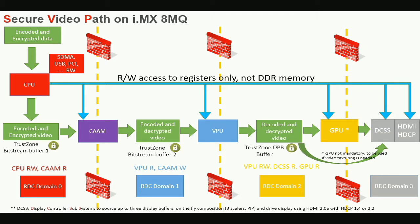When we configure the RDC this way, the CPU cannot access this memory. The CAAM decrypts data from non-secure memory and outputs it to a secure buffer. That buffer can only be read by the VPU, which decodes the data into another buffer — again only writable by the VPU. Then the DCSS, the hardware composer of the i.MX 8M, reads from that memory buffer and sends it through the HDMI port. This is what we call hardware DRM.